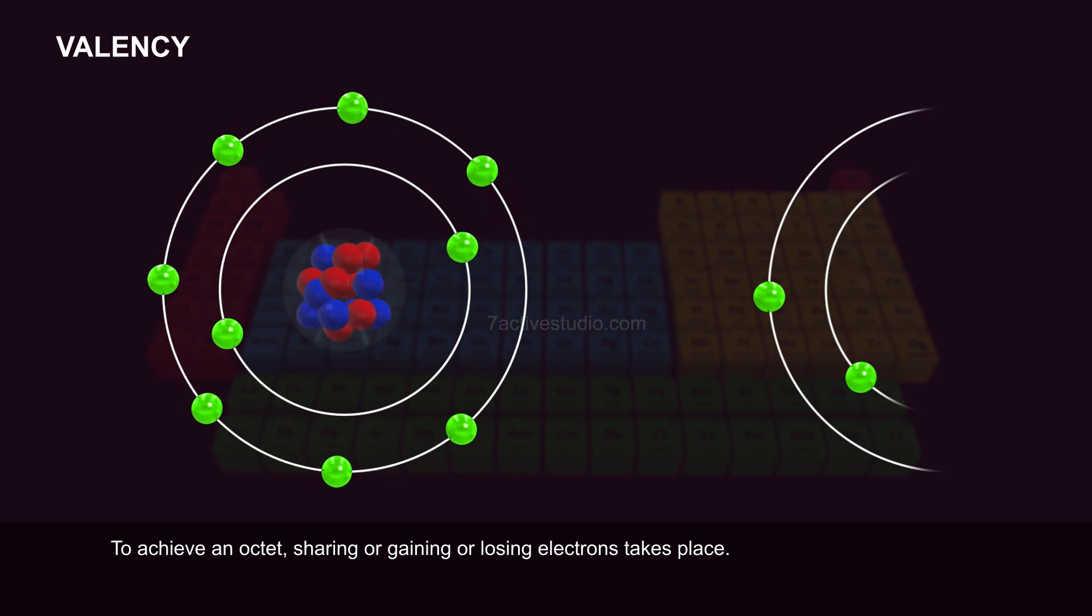To achieve an octet, sharing or gaining or losing electrons takes place.